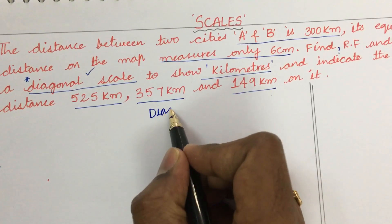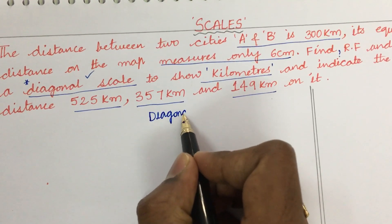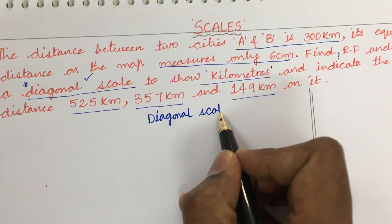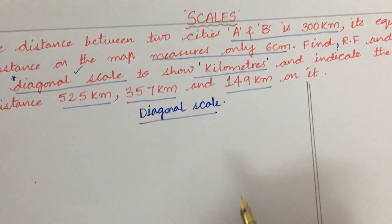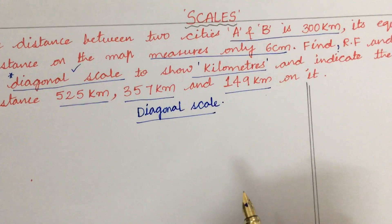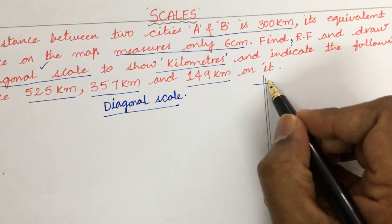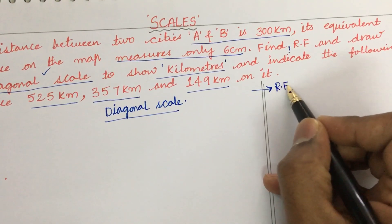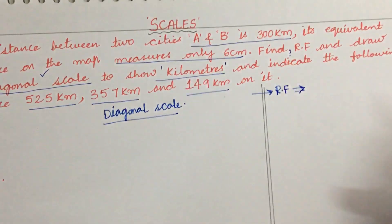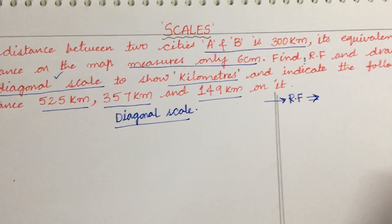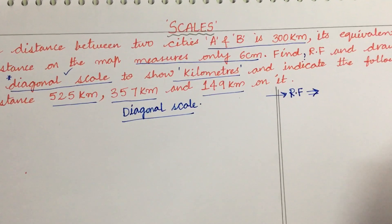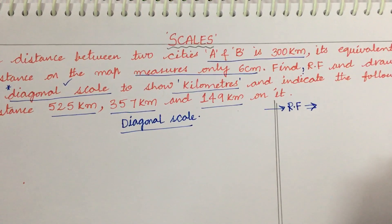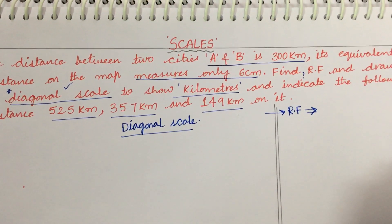We already got 50 percent of the knowledge — we know that the scale is a diagonal scale. What we are supposed to work out next is the RF. Whether the RF is given or not, the representation factor is defined as the length of the drawing on the scale to the actual length or actual distance.